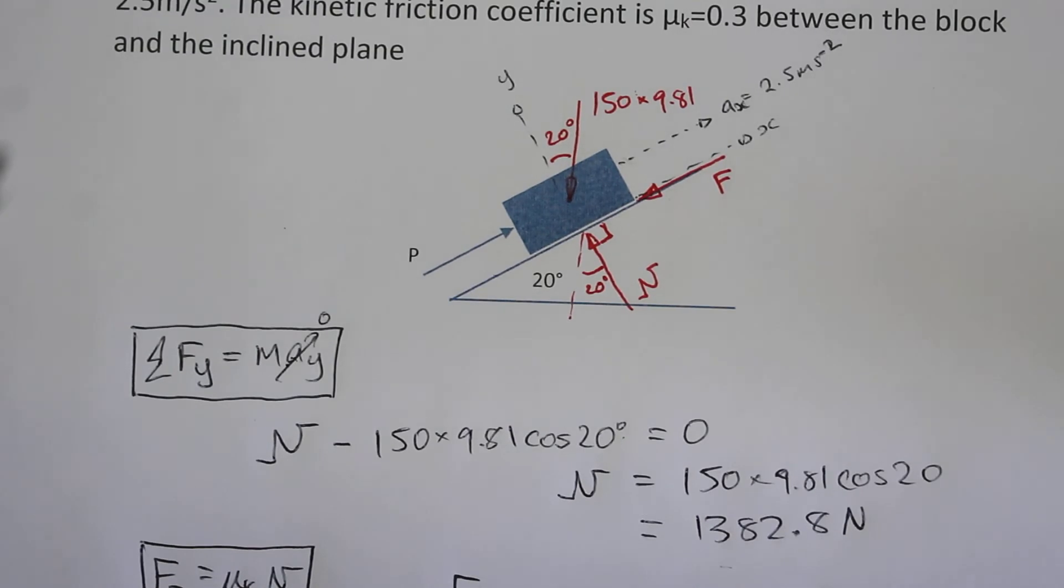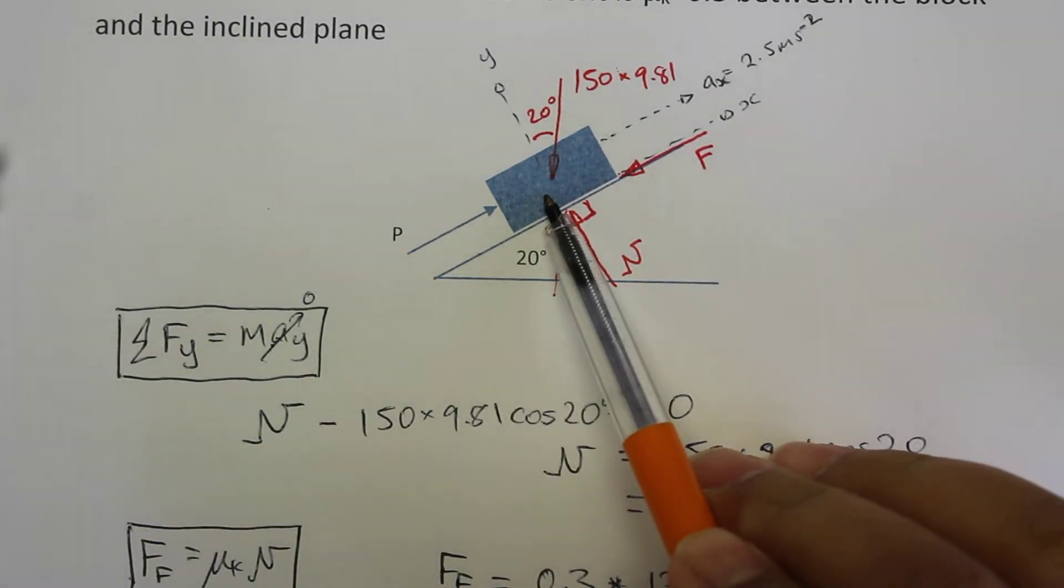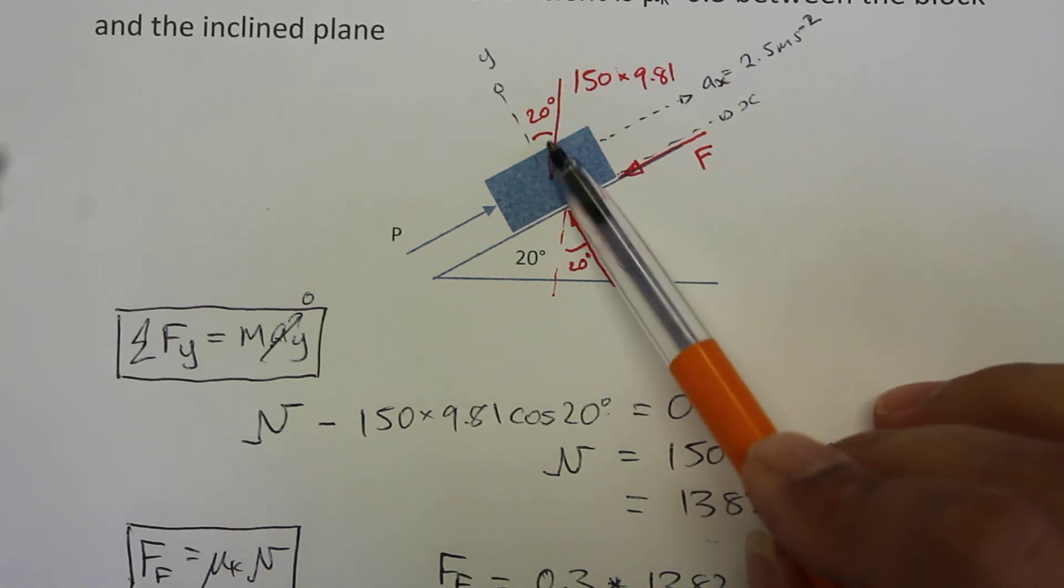The next step is to look at the forces in the x direction, and so what we have here is P going towards the positive x, F in the negative x direction, and a component of the weight in the negative x direction.